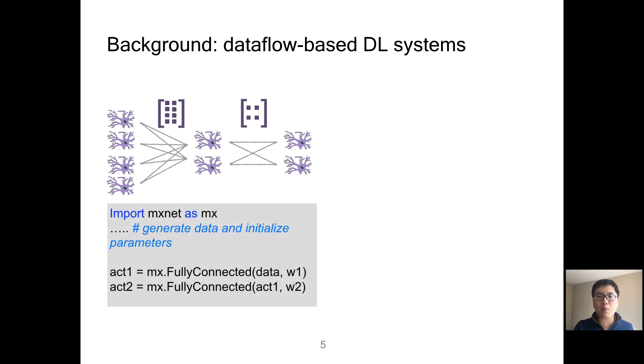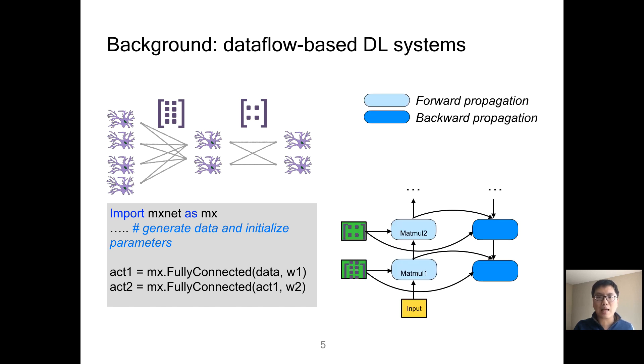There are several popular deep learning systems. We use MXNet as an example. MXNet will generate a dataflow graph based on the program. In the dataflow graph, a rectangle represents input data or a parameter tensor. A rounded rectangle represents an operator whose output is also a tensor.